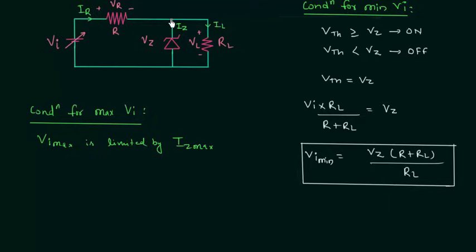If I use Kirchhoff's current law at this node, I have IR equal to IZ plus IL. IZ is maximum, IL is fixed because IL is equal to VL by RL. VL is equal to VZ, so we have VZ by RL. This is already mentioned, and RL is also fixed, so IL is fixed. When IZ is maximum, this implies IR is also maximum.